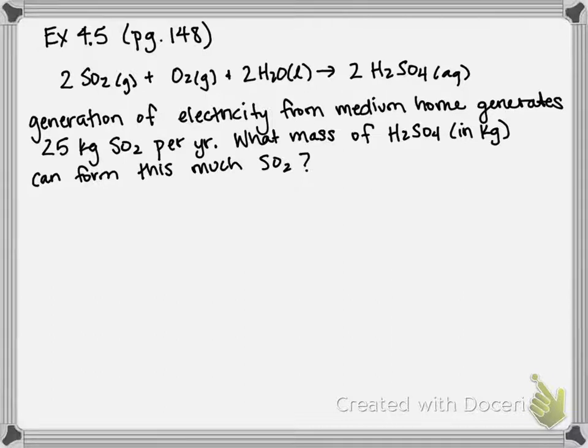So we're given a balanced equation for the production of sulfuric acid: 2 SO2 + O2 + 2 H2O produces 2 H2SO4. The question states that the generation of electricity used by a medium-sized home produces about 25 kg of SO2 per year. Assuming that there is more than enough oxygen and water, what mass of H2SO4 in kilograms can form from this much SO2?